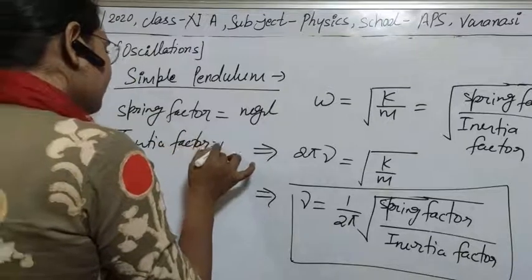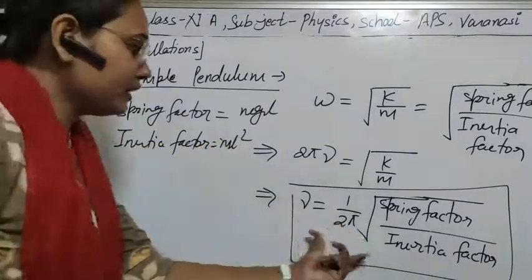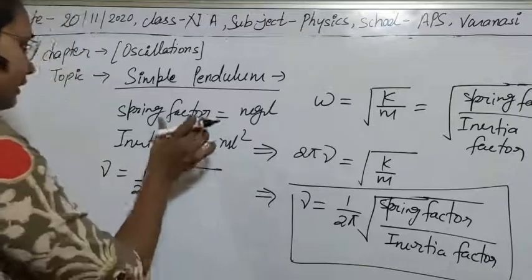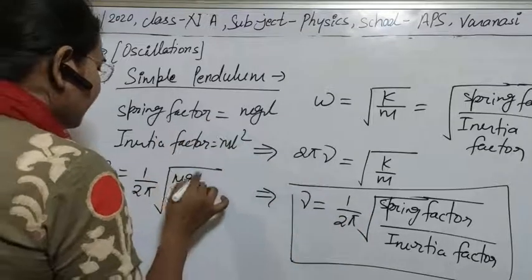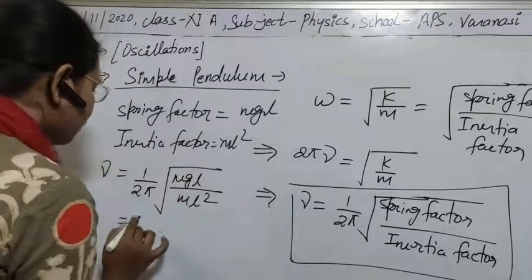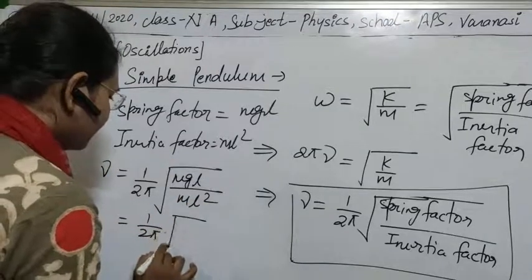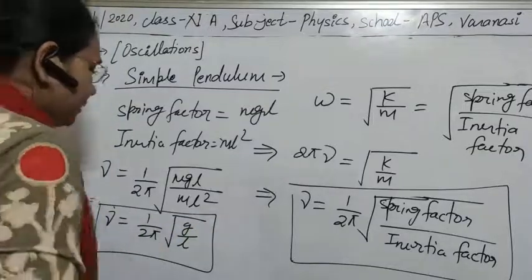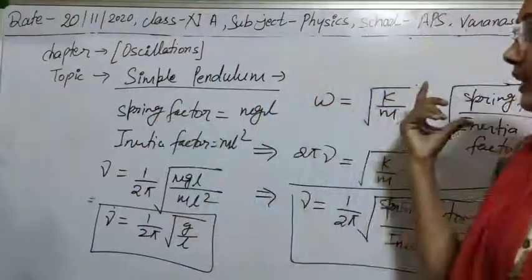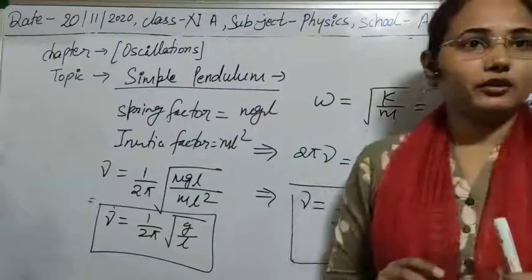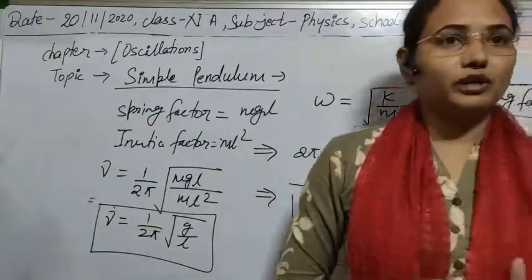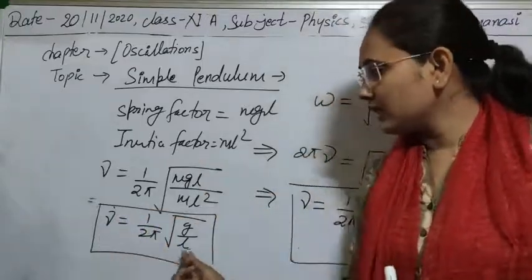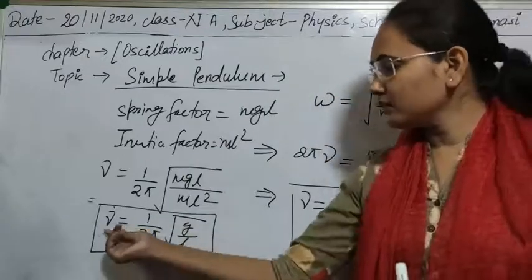The inertia factor equals ml². Substituting these values, nu equals (1/2π) times the square root of mgl over ml², which simplifies to (1/2π) times the square root of g/l. So the frequency of a simple pendulum is (1/2π)√(g/l). This is the natural frequency of any simple pendulum performing simple harmonic motion.